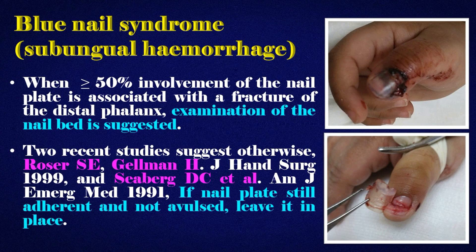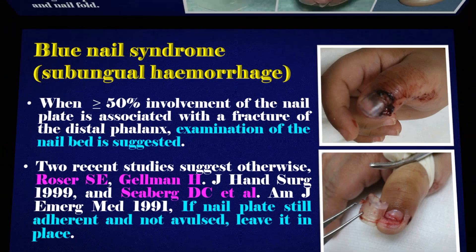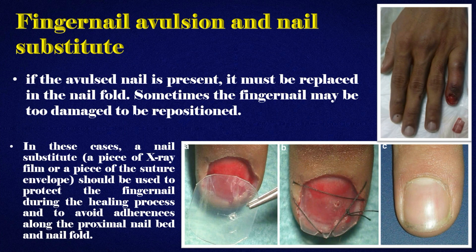When greater than or equal to 50% involvement of the nail plate is associated with a fracture of the distal phalanx, examination of the nail bed is suggested, though two recent studies suggest otherwise. If the nail plate is still adherent and not avulsed, leave it in place. If the avulsed nail is present, it must be replaced in the nail fold. When the fingernail is too damaged to be repositioned, a nail substitute — a piece of x-ray film or a piece of the suture envelope — should be used to protect the nail bed during healing and to avoid adherences along the proximal nail bed and nail fold.